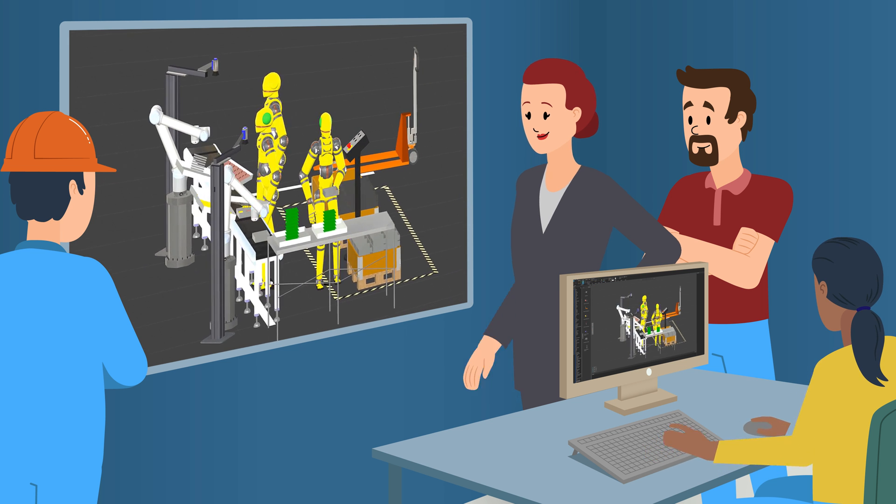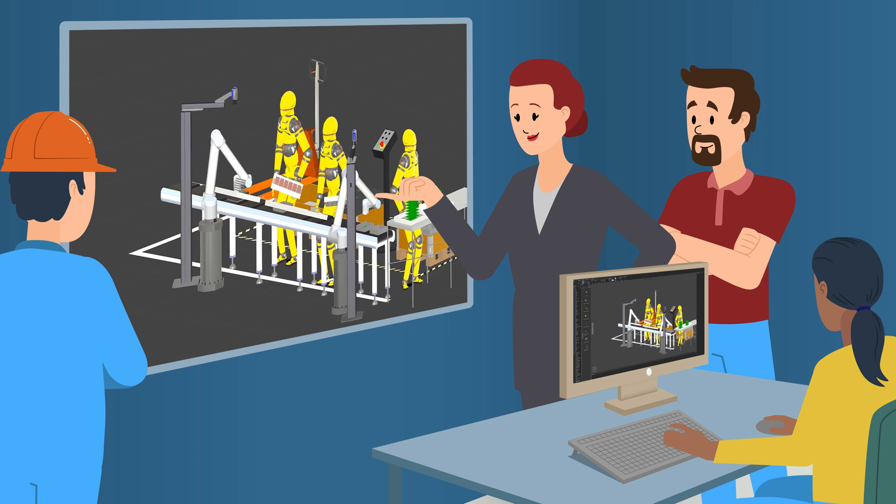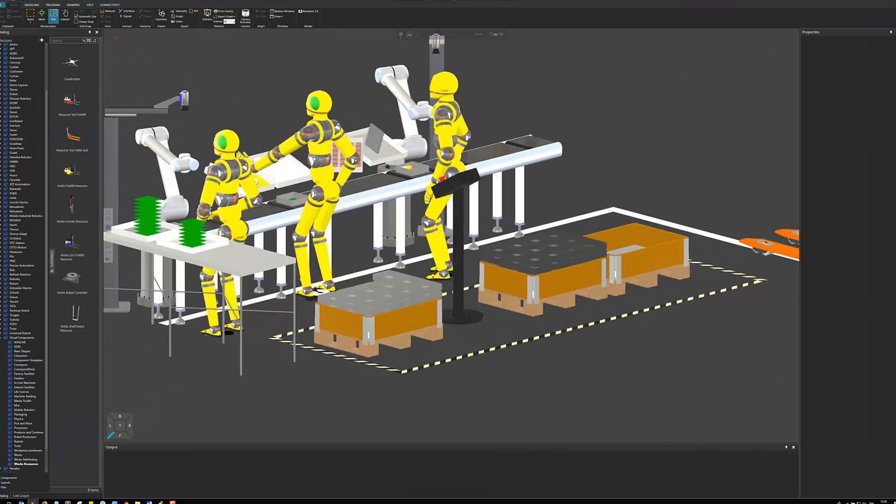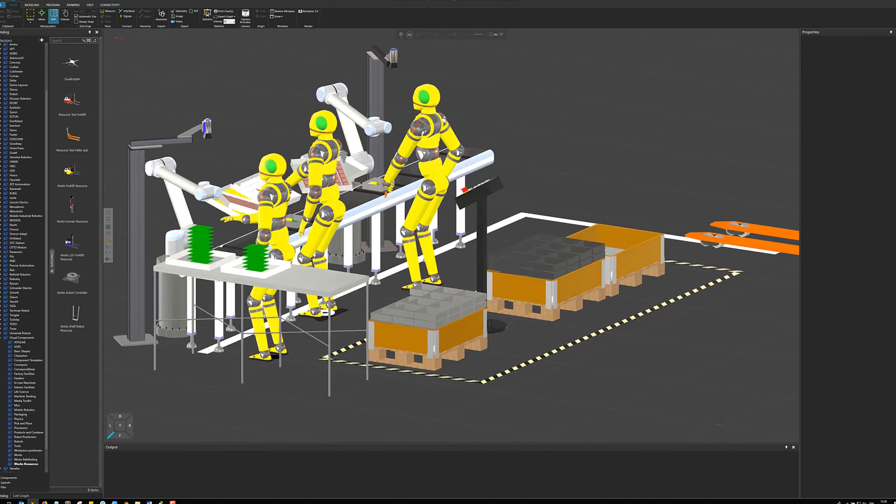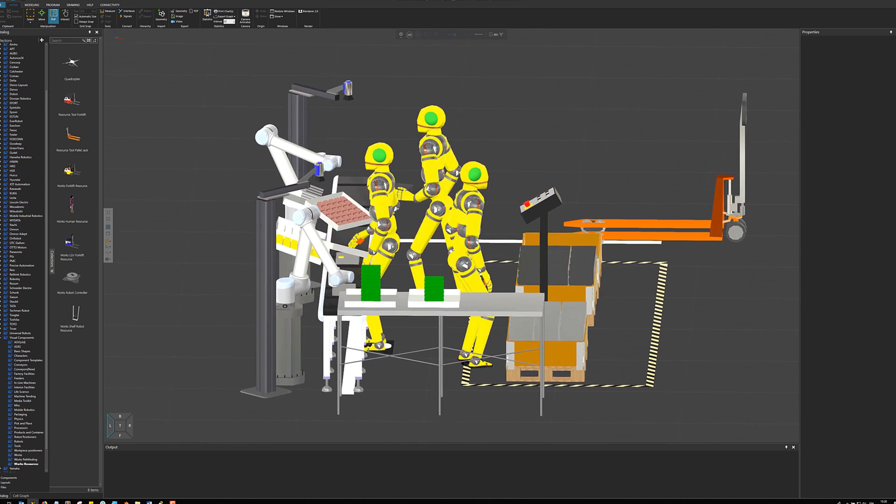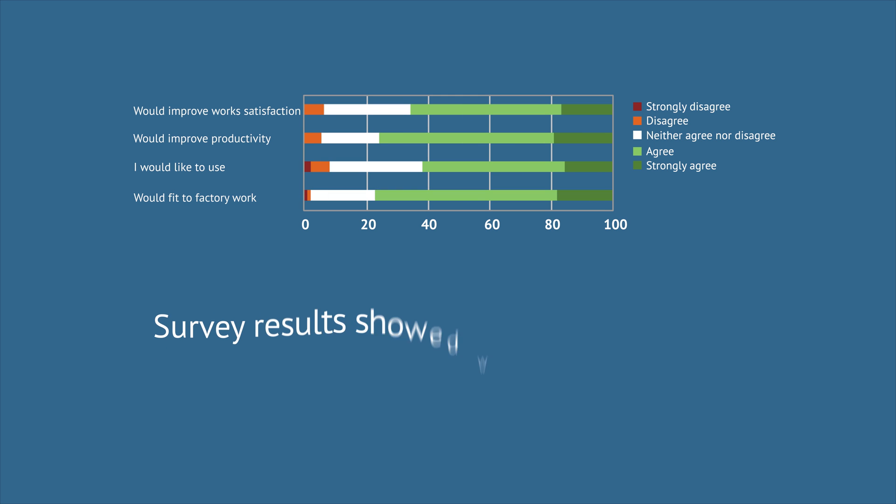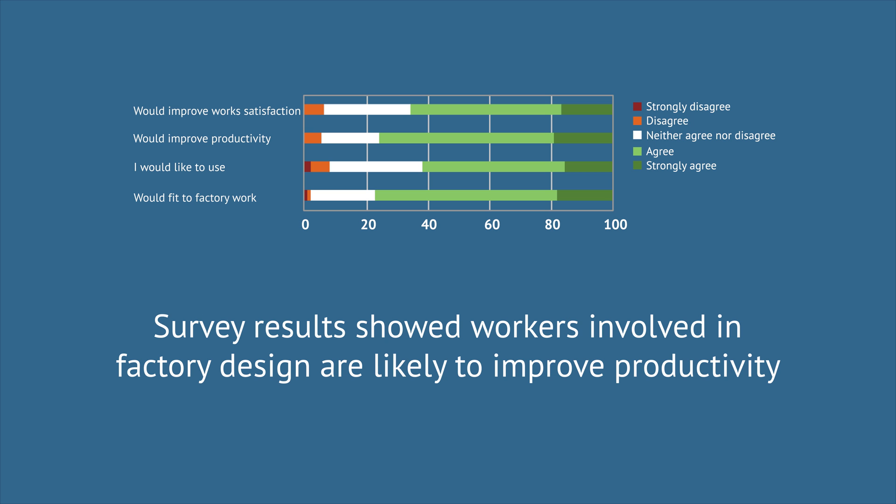Our participatory design tools allow factories to virtually model and test designs before they're physically put together. This allows workers from varied backgrounds to be involved in factory design and guarantees the ideal setup for workers at every level. In a survey of over 100 industrial union representatives, 76% agreed this would improve productivity.